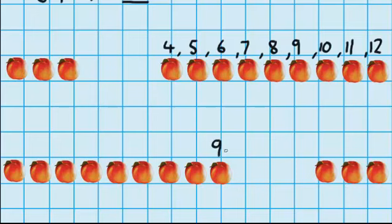So nine, and if we're counting on from that, we'll have ten, eleven, twelve. So you can see we got the same answer. We got twelve using both methods, but it was heaps quicker if we counted on from the bigger number.